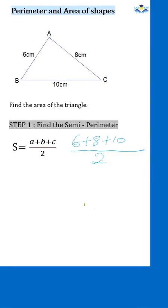6 plus 8 plus 10 is going to give me 24, and 24 divided by 2 is 12. So we are getting the semi-perimeter to be 12.